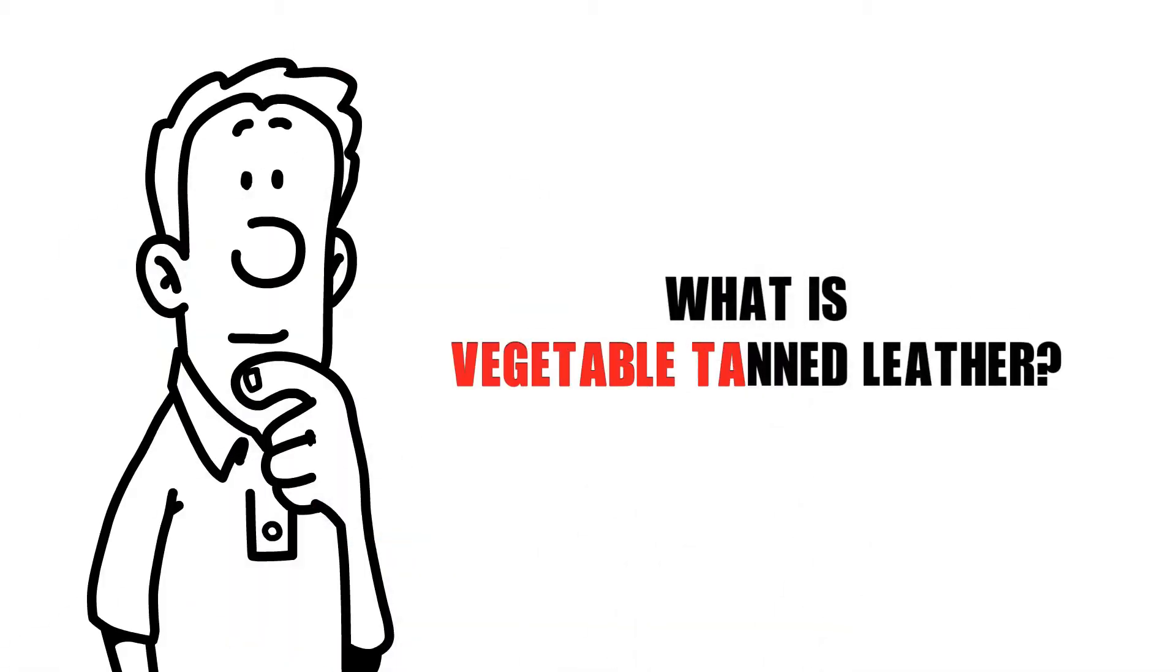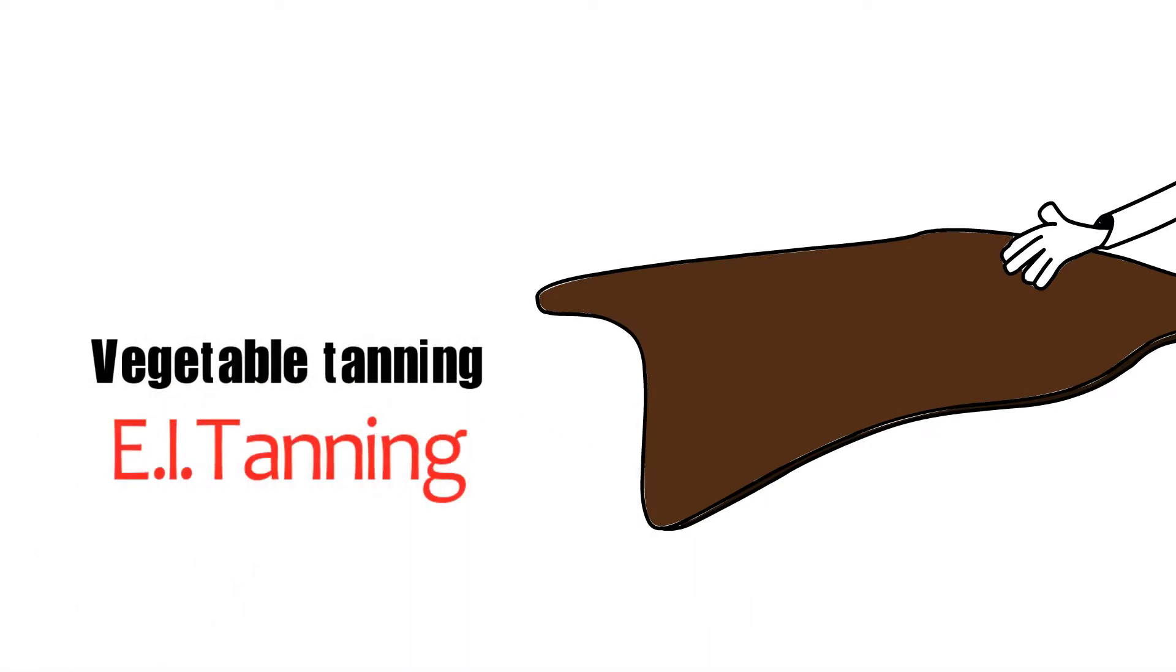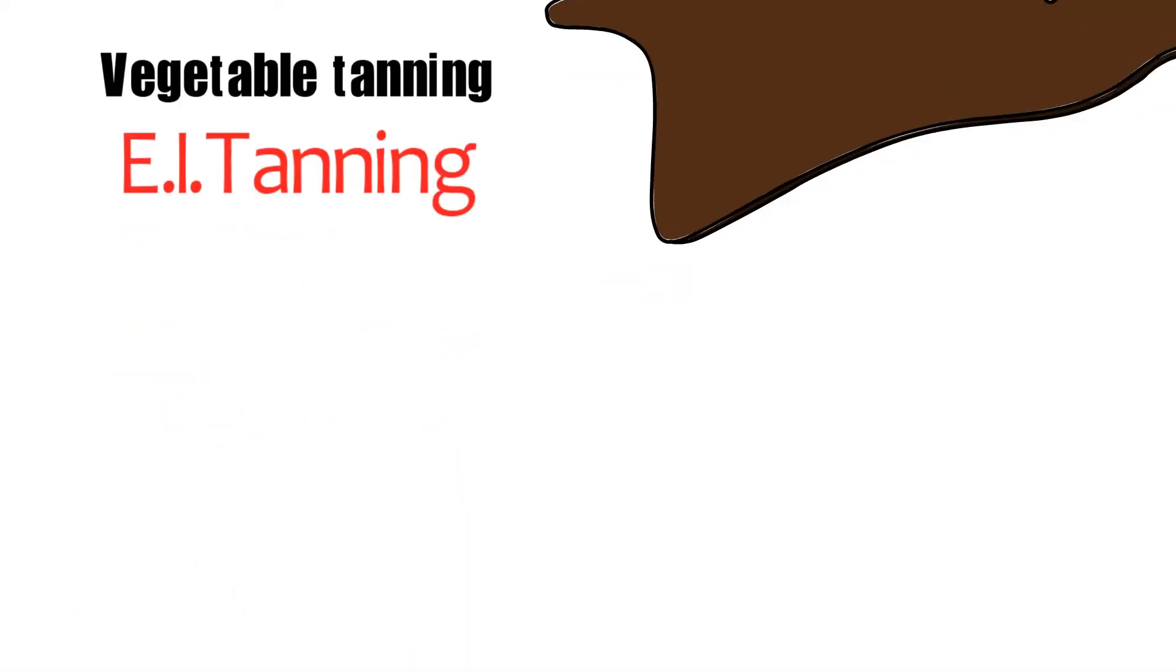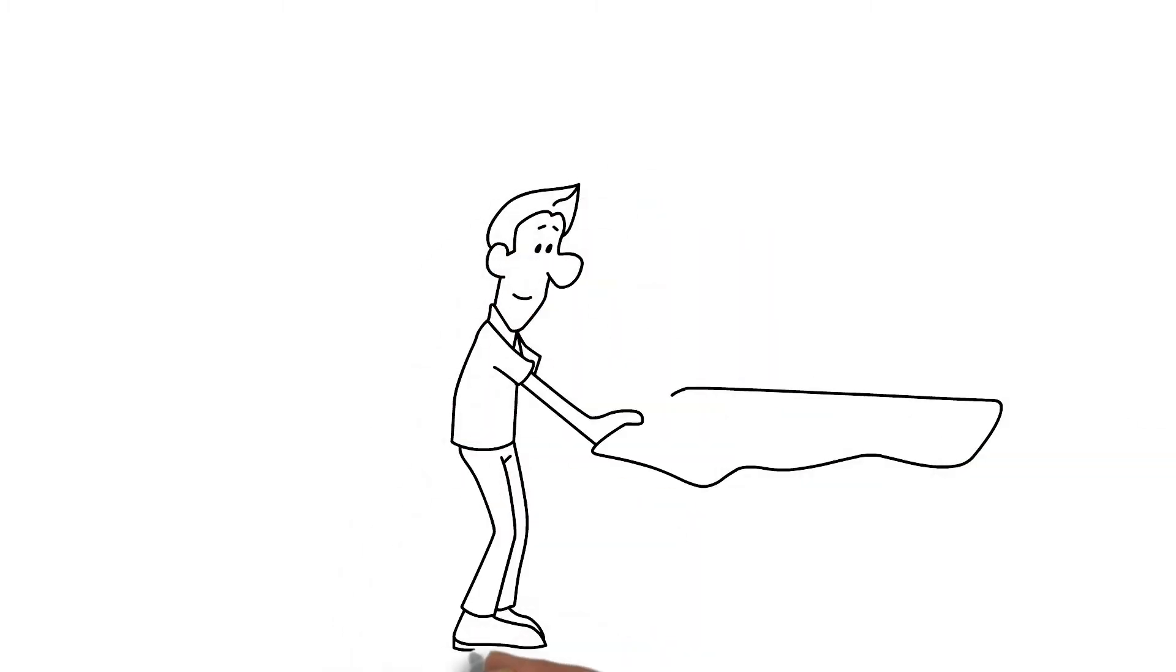What is Vegetable Tan Leather? Vegetable tanning, often known as EI tanning in India, East India tanning, is a historic and traditional method of tanning leather that has been passed down through generations.